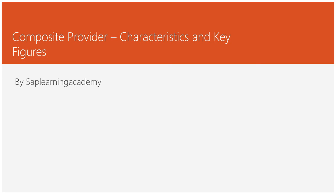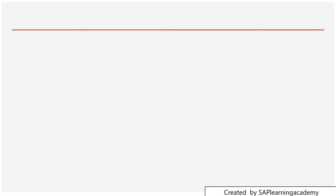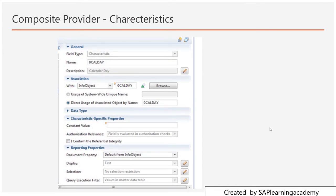I'll be telling you in two different slides. First, I'll be talking about the characteristics features and then I'll be talking about the key figures features. When you go into the output tab of the composite provider, you can find there are a lot of fields on the left-hand side. I'll be going one by one about the changeable properties.